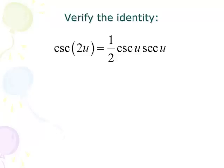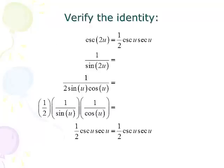Let's verify the identity: cosecant 2u equals one half cosecant u secant u. We don't have a double angle formula for cosecant, but cosecant is 1 over sine. So we write 1 over sine 2u, then use the double angle formula: sine 2u equals 2 sine u cosine u. Breaking the fraction apart gives one half times (1 over sine u) times (1 over cosine u). Since 1 over sine is cosecant and 1 over cosine is secant, this verifies the identity: cosecant 2u equals one half cosecant u secant u.